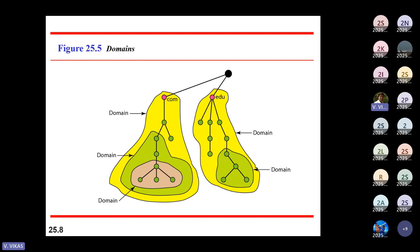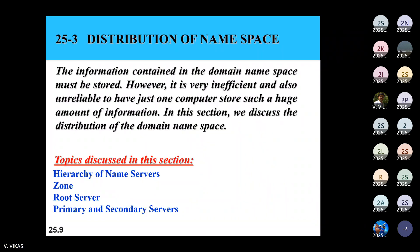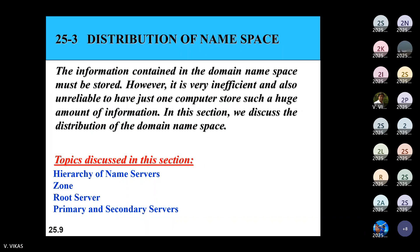A domain is the area under a particular node. The concept of zone and domain is also important here — the area under your node is considered the domain, and if you have authority over the entire node, then zone and domain are the same.